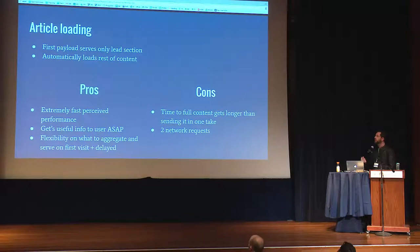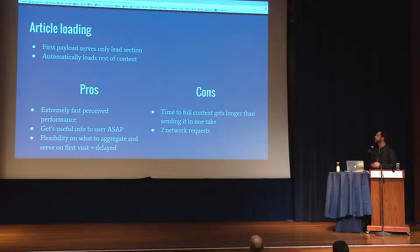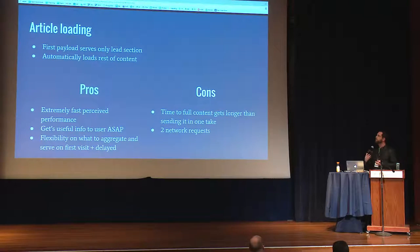We made some radical changes just to see how fast things could be. For article loading, we're doing split loading — serving the first section with the infobox, then automatically requesting the rest of the content. That's why Adam mentioned lower first paint: we have a different definition because we're only serving the first part of the article initially, and quickly getting the rest. So you get the viewport content really, really fast.